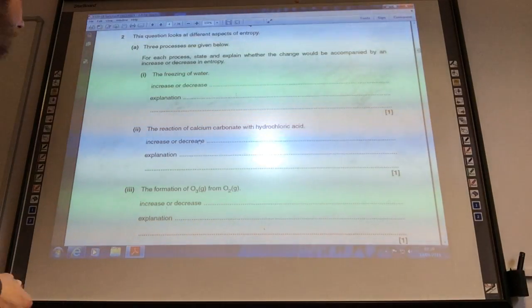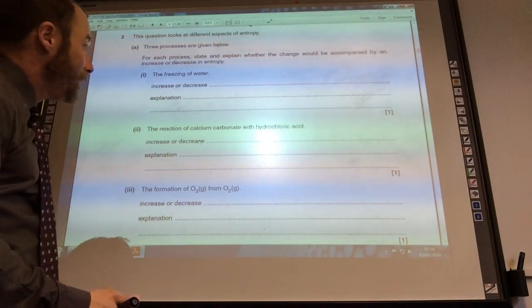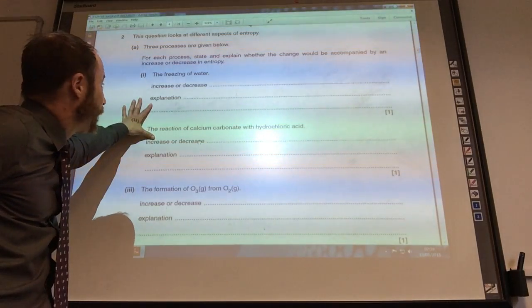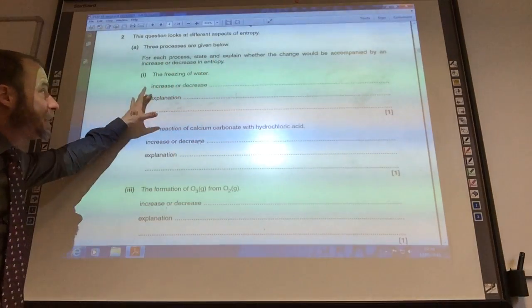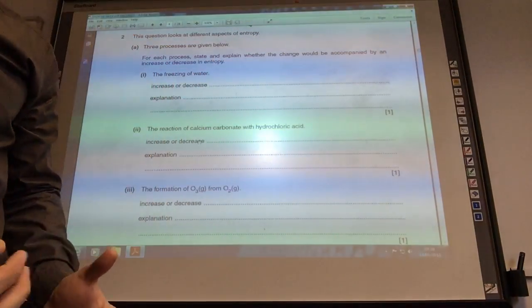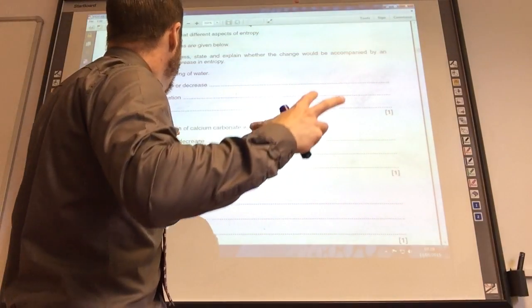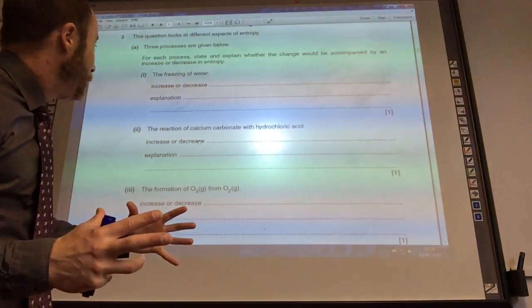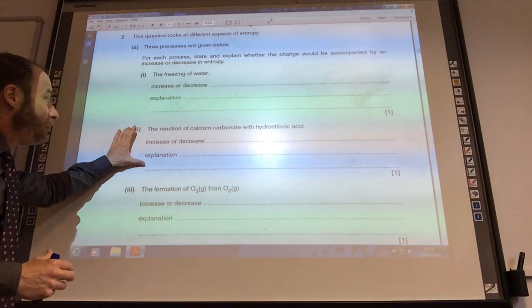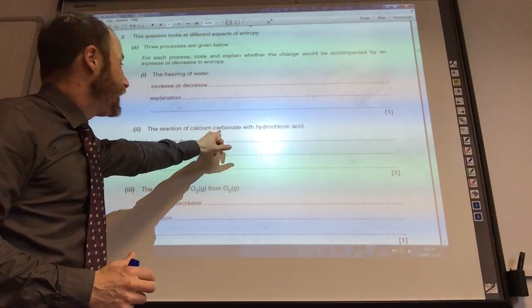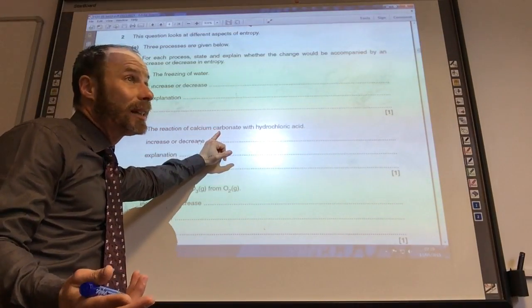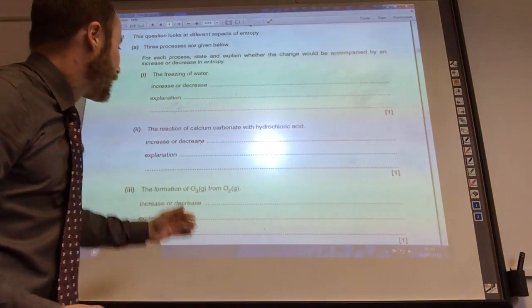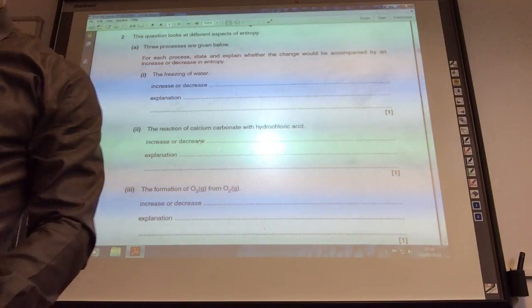Okay, so we've now got some questions about entropy. Quite a nice one to start with. So we're going to have to explain for each one, does the entropy increase or decrease, and just a brief explanation. Remember it's only one mark for the whole thing. So freezing of water, the entropy of the system is obviously going to decrease because the disorder is decreasing as the water molecules go from a liquid where they're all moving around into a solid state where they're all in fixed positions. Reaction of calcium carbonate with hydrochloric acid. Well, the key thing you need to know from your AS chemistry is that you're going to produce carbon dioxide gas. As soon as you produce a gas, the entropy of the system increases. So it increases because I am forming a gas.